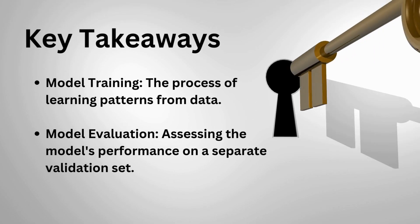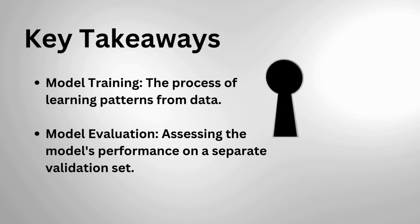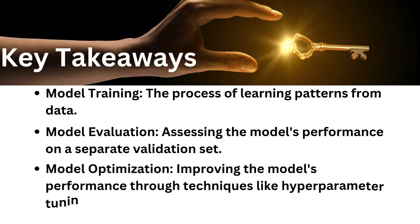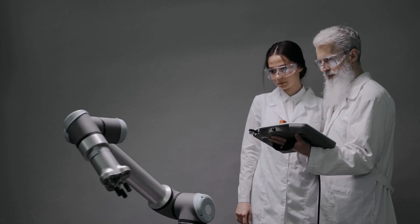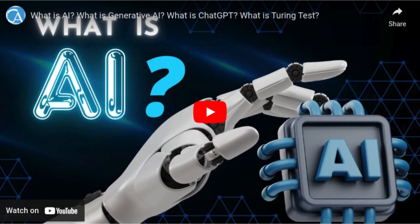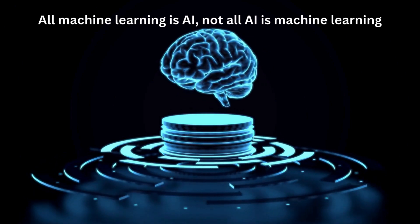To summarize what we covered: model training is when the model learns from data to make predictions; we then evaluate the model using a separate validation set to check how well it generalizes; and finally we optimize through hyperparameter tuning and regularization to prevent overfitting. Now, how does this differ from AI? AI is the broad field focused on making machines simulate human intelligence, while machine learning is a way to achieve AI — the tool or technique used within the AI toolbox. It's like a car and its engine: AI is the car, and machine learning is the engine that makes it go. So while all machine learning is AI, not all AI is machine learning. AI includes rule-based systems and expert systems that don't necessarily learn from data.